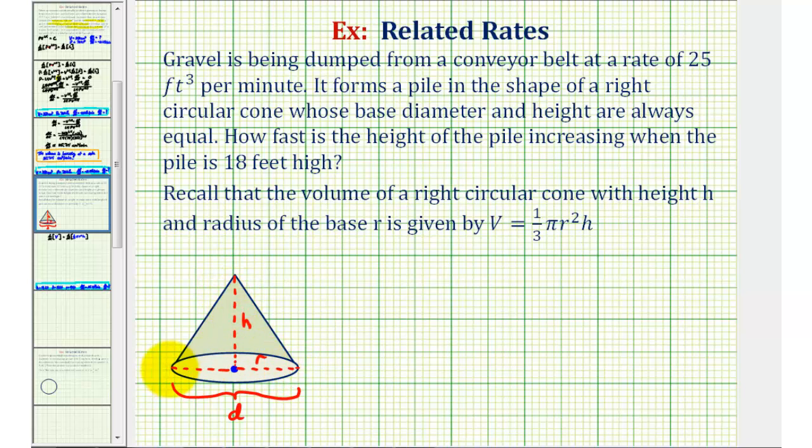The base diameter and height are always equal, so H is always equal to D. We want to know how fast the height of the pile is increasing when the pile is 18 feet high.